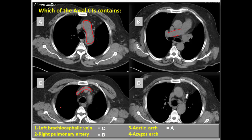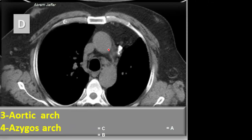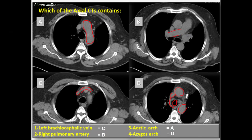Let's look at D. Again we have these two circles, which represent the ascending aorta and the descending aorta, and here is the trachea. On the right side of the ascending aorta is the superior vena cava, and the superior vena cava is receiving a structure that comes from behind forward and opens into the superior vena cava. This structure is located on the right side, and it is the arch of the azygous vein, which is located above the root of the right lung. So the azygous arch matches with D.